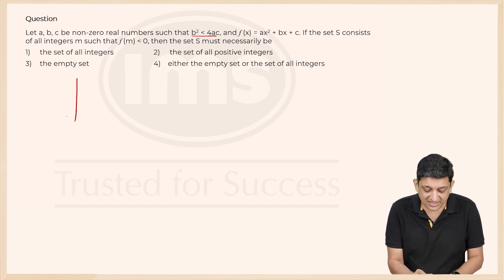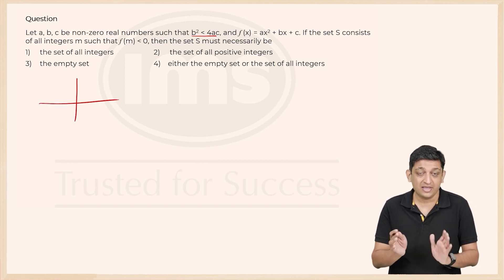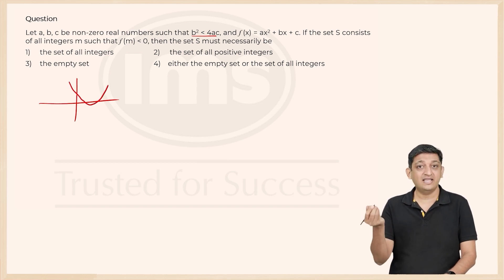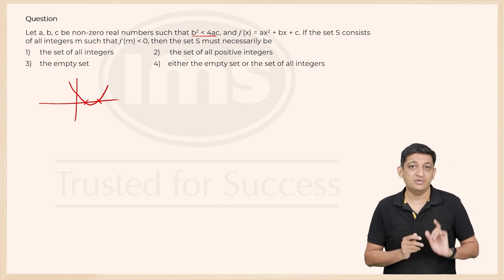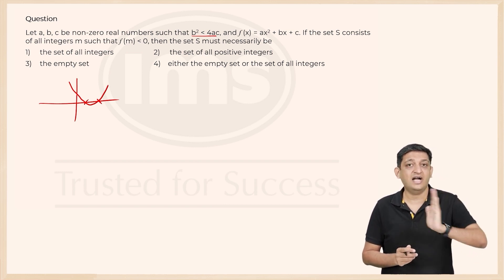If you have, let's say this as an xy plane, if you have a quadratic equation that looks like this, it basically tells you that there are two real roots that are present because it cuts the x-axis at two different points.